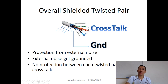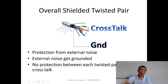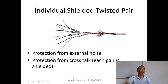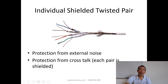However, there can be crosstalk between cables — if the voltage is high enough or there's a cable cut inside. With an overall shielded cable, there's no protection between pairs for crosstalk. But with individually shielded twisted pairs, not only is the overall cable shielded, each pair inside is also shielded, providing protection from both external noise and crosstalk.